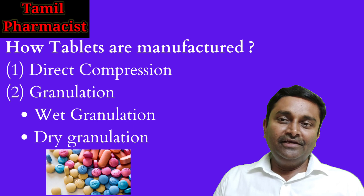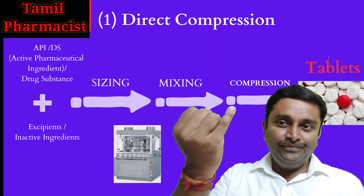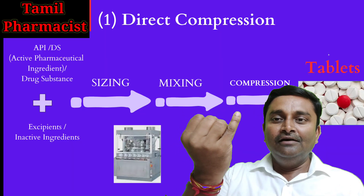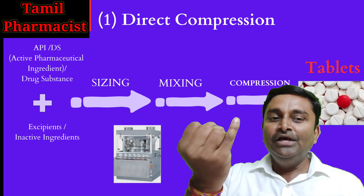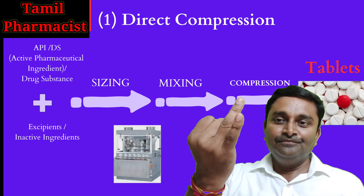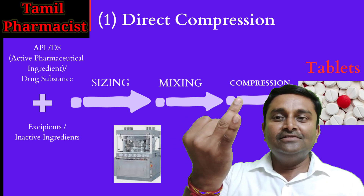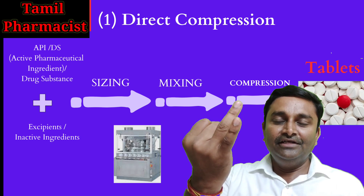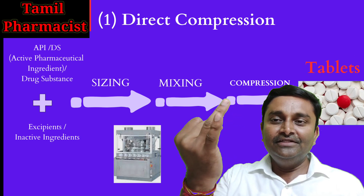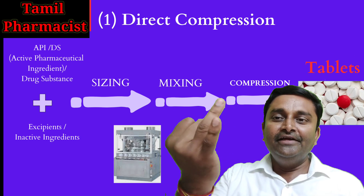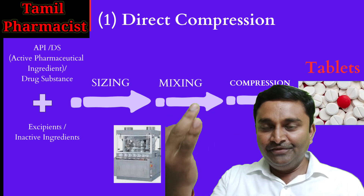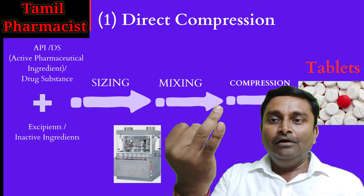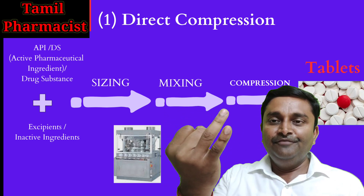The API is the active ingredient — we can use any therapeutic effects of the drug substance. The excipient is an inactive ingredient; it is inert and has no therapeutic effect on its own.